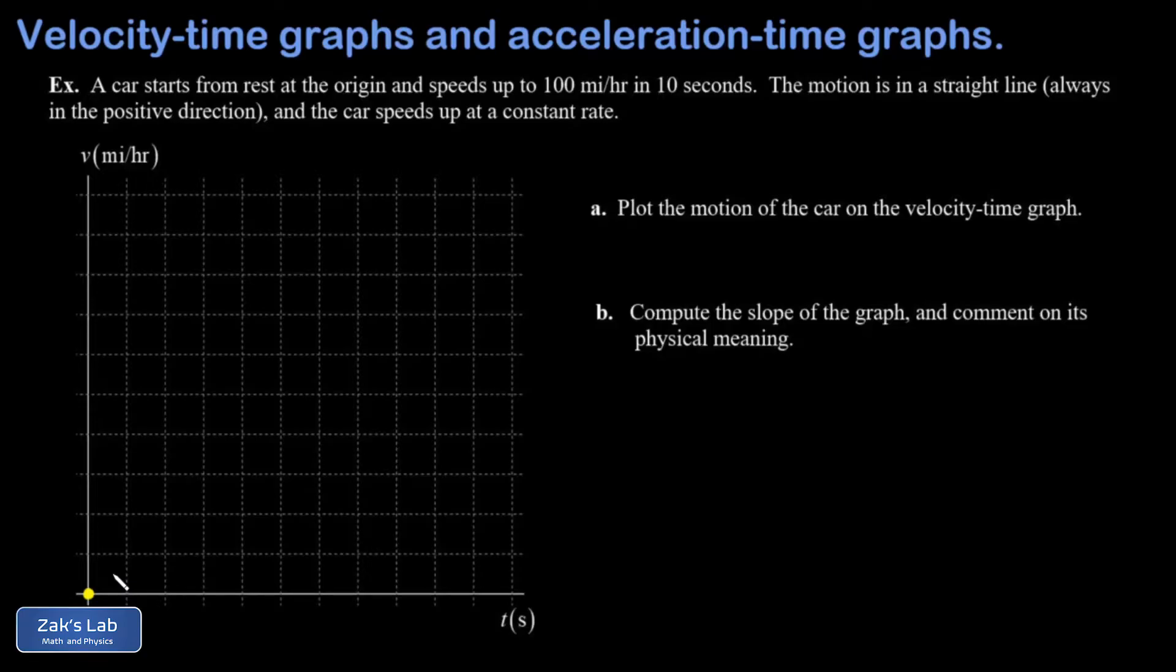The only other point we know is that when t is equal to 10 seconds, the velocity is going to be positive 100 miles per hour. The grid spaces in the vertical direction we're going to take to be 10 miles an hour each. There's the plus 50 miles per hour for reference, and there's 100 miles per hour. So we know the car is moving at plus 100 miles per hour when t is equal to 10 seconds. That's our second ordered pair that we know on the graph.